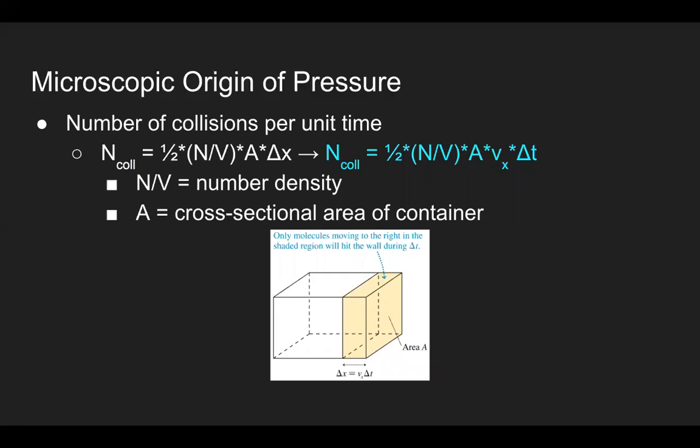Remember, the number density is the total number of gas molecules divided by the entire volume of the container it is enclosed in. The length delta x may also be rewritten by the product of velocity and time in the shaded region, which is just bringing back kinematics. Finally, the one half in the equation makes the assumption that only half of the molecules are moving to the right side of the container.